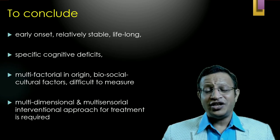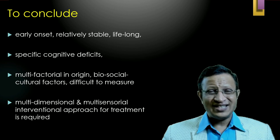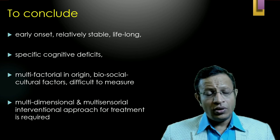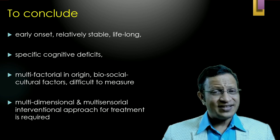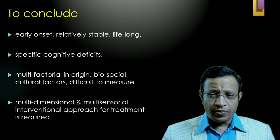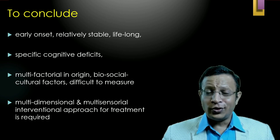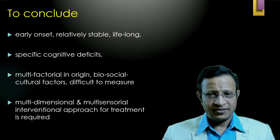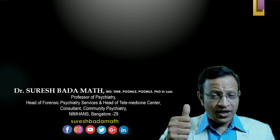In summary, SLD is a neurodevelopmental disorder with early onset, a relatively stable deficit that is lifelong in nature, with specific cognitive deficits in learning and academics, multifactorial origin, and biopsychosocial and cultural factors all playing important roles. It is difficult to measure with a single instrument across the world. SLD is multidimensional and requires a multi-sensorial interventional approach for treatment. SLD is a neurodevelopmental disorder having problems in specific brain regions — we know brain changes exist, but we do not yet know exactly what they are. Thank you very much for your valuable time, stay safe.